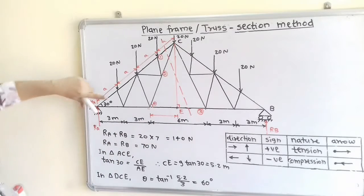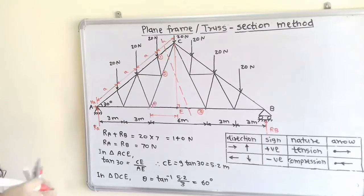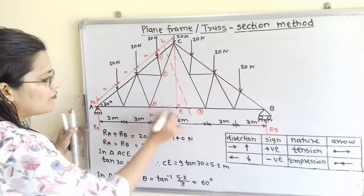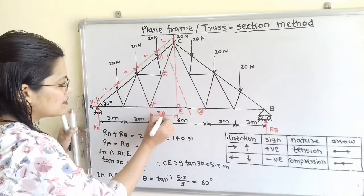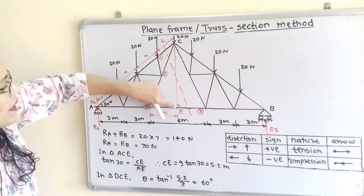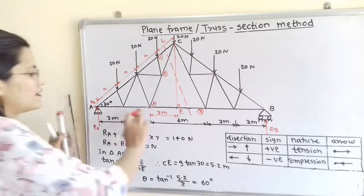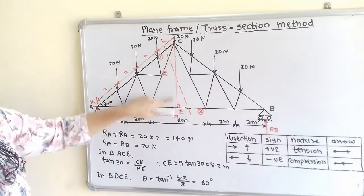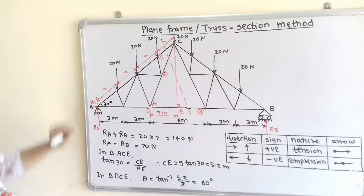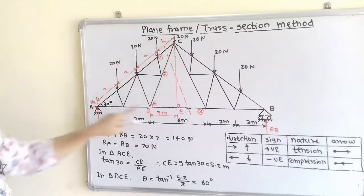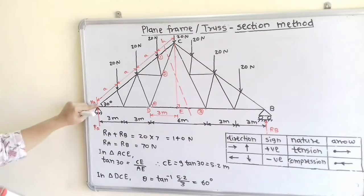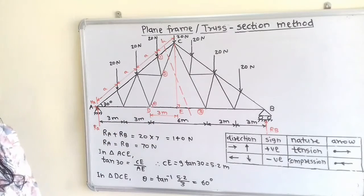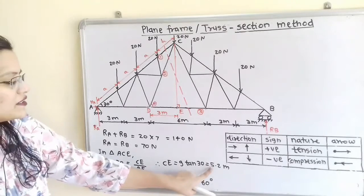The distance from A to the midpoint D is 3 meters, and from D to E is also 3 meters, making the whole distance AE equal to 6 meters. E is the midpoint, so the remaining distance on the left-hand side is 3 meters. In triangle CDE, the nearby side DE is known but the opposite side CE is not. We consider triangle CEA, where the angle at A is 30 degrees. So tan(30) = CE divided by AE, and AE equals 3 + 3 + 3 = 9 meters. Therefore, CE equals 9 × tan(30), which equals 5.2 meters.